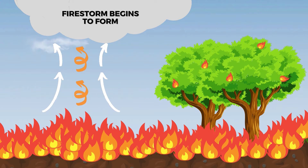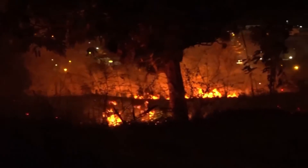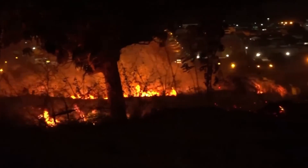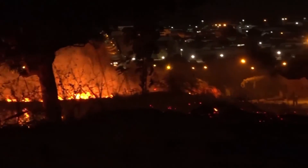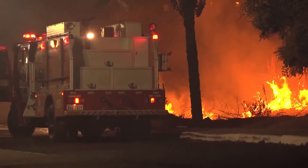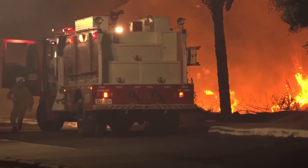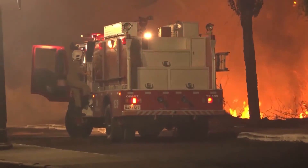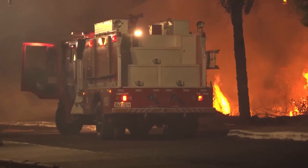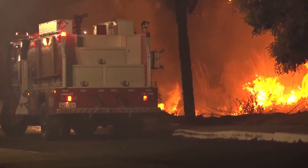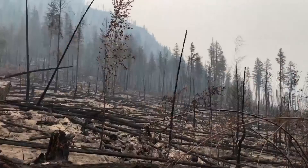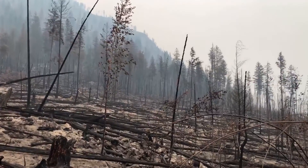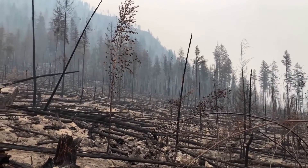With more and more water droplets combining, a cloud forms. This ongoing vertical motion of hot rising air creates what meteorologists refer to as a thermal column. This column continues to fuel the firestorm cloud by transporting smoke, ash, and oxygen from the wildfire below.